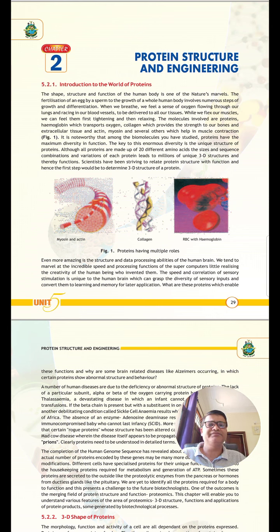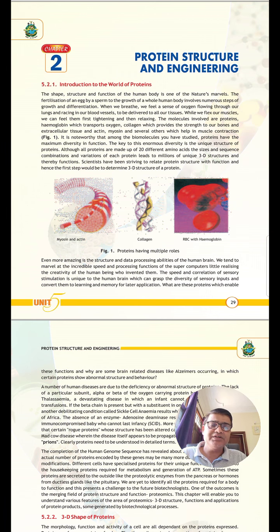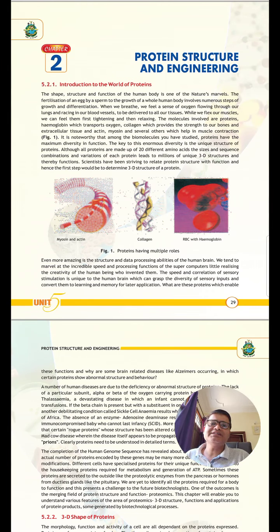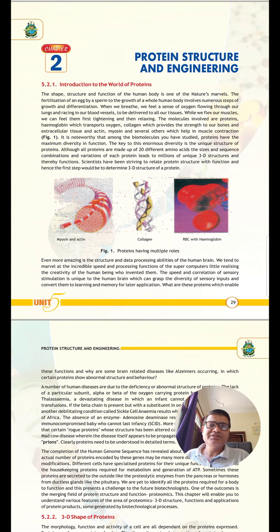Next, you know the 3D structure of protein. If you want to see the protein structure, you can classify protein on the basis of structure. So there is a primary structure, secondary structure, tertiary structure, and quaternary structure. You have already read these things in class 11. Now, in this protein structure and engineering chapter, this is the introductory part.